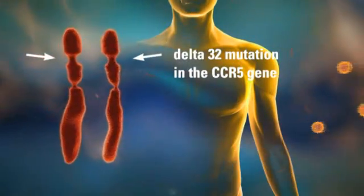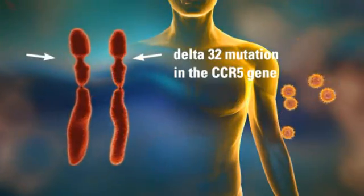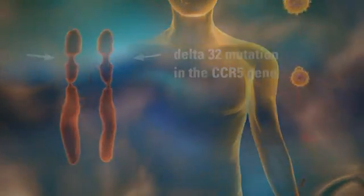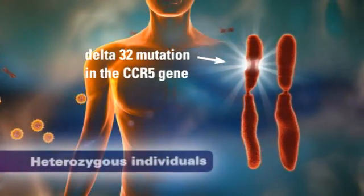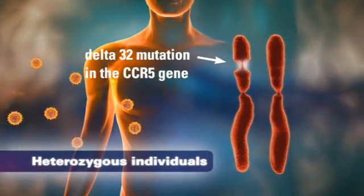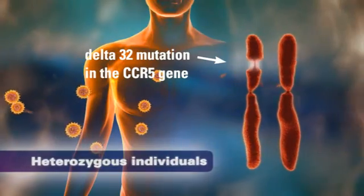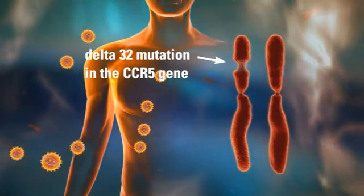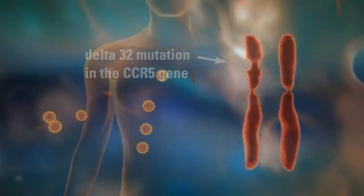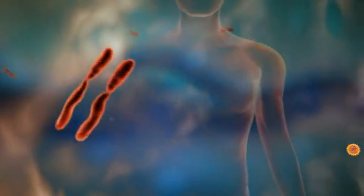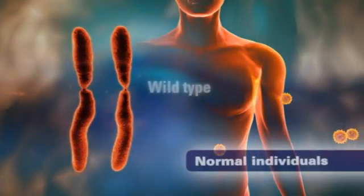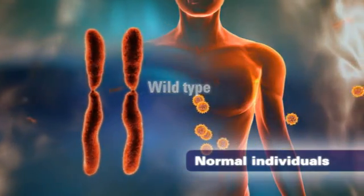Delta 32 heterozygous individuals carrying one functional CCR5 gene, while still susceptible to HIV infection, display a delayed progression of the disease compared with normal individuals who have two functional copies of the gene.